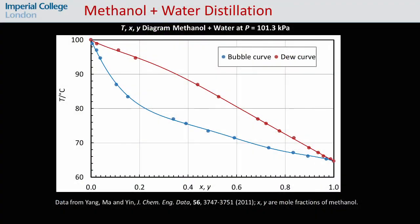From the measured temperatures and the temperature composition graph for methanol plus water, seen here, we can read off the approximate compositions of the liquid in the reboiler and the vapor leaving the top of the column.